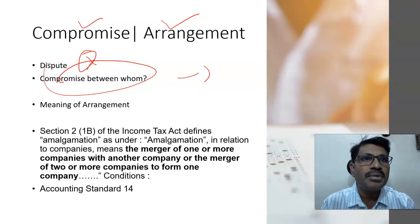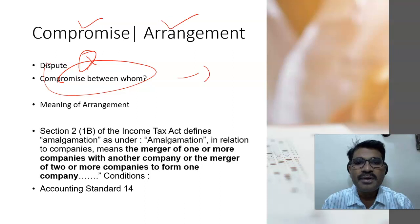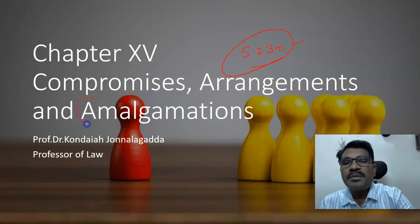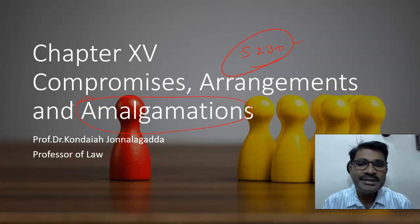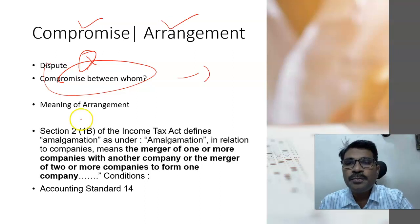Chapter 15 of the Companies Act deals with compromises and arrangements. The meaning of 'arrangement' is also not defined in the Act. Arrangement is basically a type of scheme drafted among shareholders or creditors, and any such scheme among members of a company for restructuring is called an 'arrangement.' The Companies Act is also very silent on the definition of amalgamation.